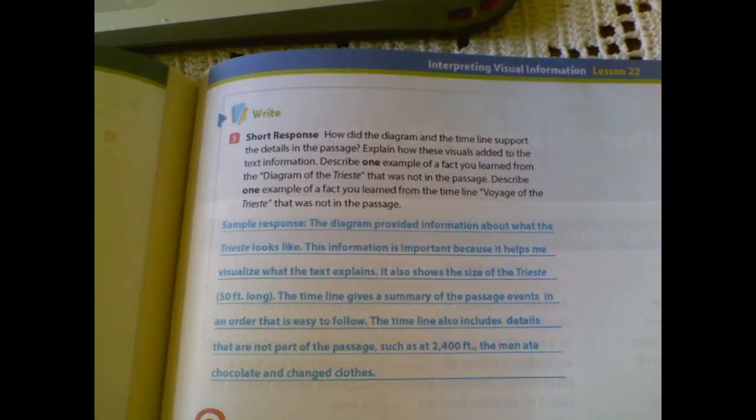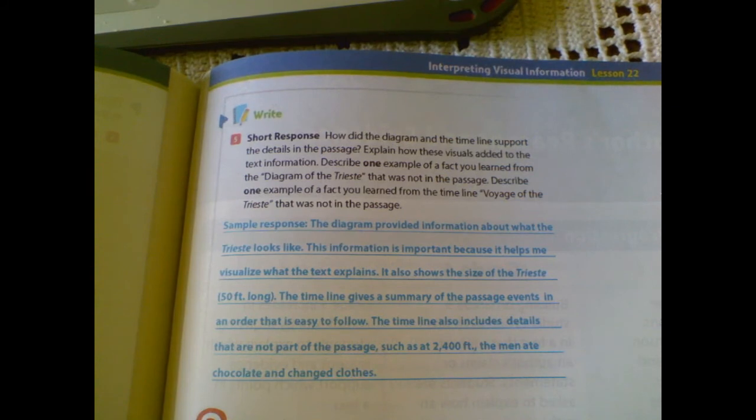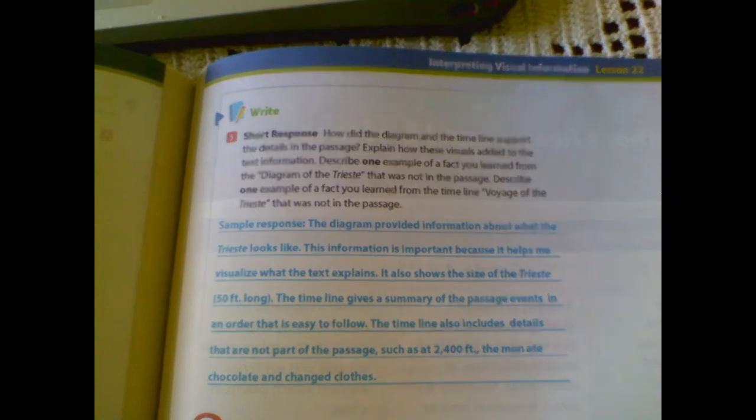Let's go look at your writing. How did the diagram and the timeline support the details in the passage? Explain how these visuals added to the text information. Describe one example of a fact you learned from the diagram that was not in the passage. Describe one example of a fact you learned from the timeline that was not in the passage.